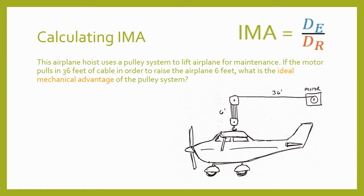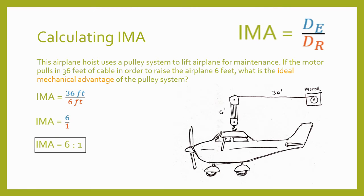This airplane hoist uses a pulley system to lift an airplane for maintenance. If the motor pulls in 36 feet of cable in order to raise the airplane 6 feet, what is the ideal mechanical advantage of the pulley system? IMA equals the distance moved by the effort over the distance moved by the resistance. The effort distance is 36 feet and the resistance distance is 6 feet, which simplifies to 6 over 1, or an ideal mechanical advantage of 6 to 1.